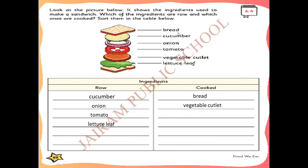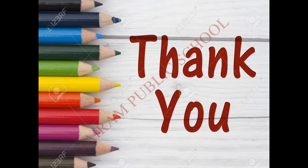Now sort them: bread is a baked item from the bakery, so it is a cooked one. Cucumber is raw - you can eat it raw. Onion is also raw. Tomato - you can eat it raw. Vegetable cutlet: you put all the vegetables, chili powder, masala, everything, then cook it - so it is a cooked food. Lettuce leaf is a raw thing. So raw: cucumber, onion, tomato, lettuce leaf. Cooked: bread and vegetable cutlet. Children, write it - thank you.